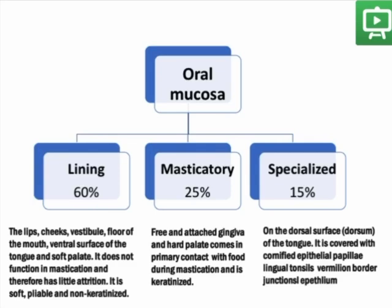The lining mucosa functions little in mastication and therefore experiences no high friction forces. It is therefore soft and pliable, and non-keratinized. The masticatory mucosa, on the other side, constitutes 25% and comprises the free and attached gingiva along with the hard palate. It functions mostly in mastication and therefore has a rigid, rubbery texture. It is a keratinized epithelium.